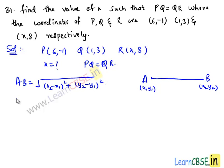Now let us take PQ equals QR. Squaring on both sides, we get PQ² equals QR².